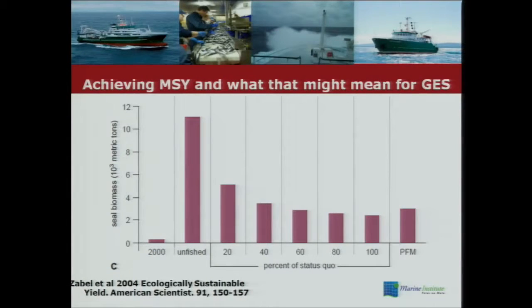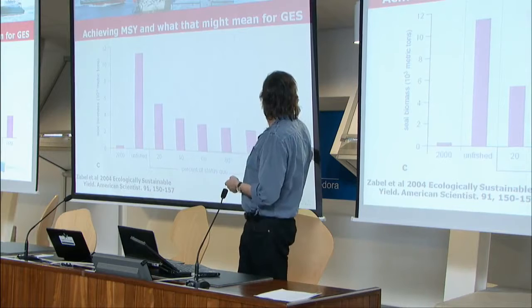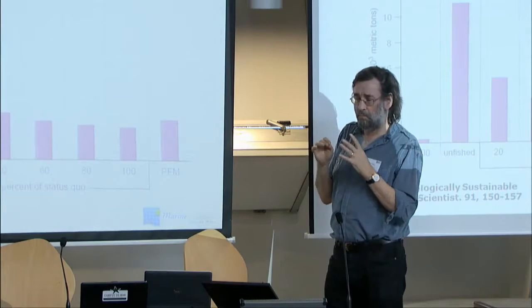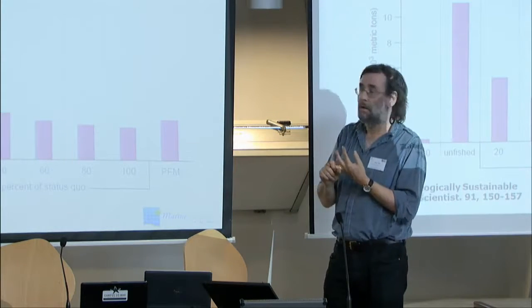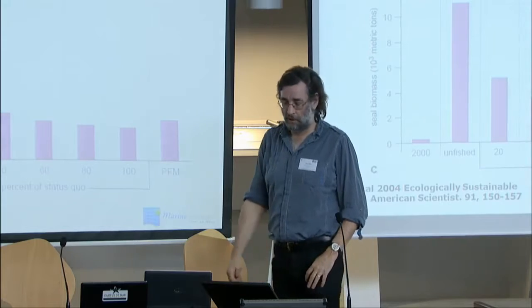I'm not sure how controversial this one is, but whenever I raise seals in Ireland I get death threats. This is a Baltic paper by Zabel et al., examining the carrying capacity of seals — what you'd get if there was no fishing — and then what you'd get with various fishing scenarios: status quo, down to 20% of status quo, and a precautionary fishing approach. The key point is that pretty well whatever you do — precautionary fishing, 20% of status quo — you will have an impact on seals. Seals are one of the proposed MSFD descriptors for food web function and structure.